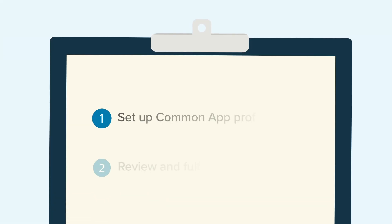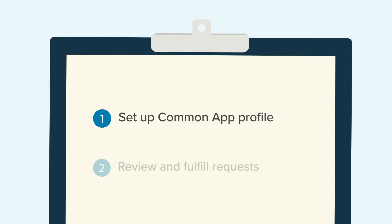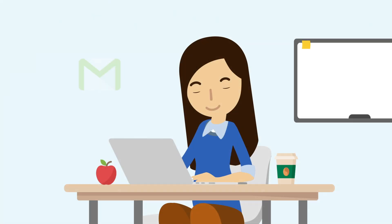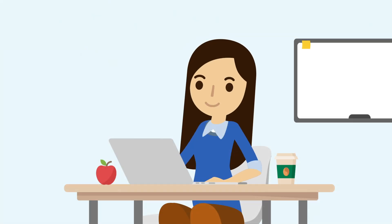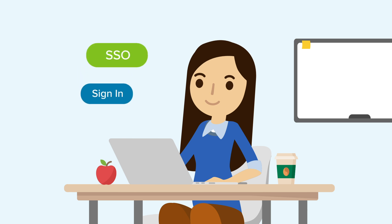Once you've received your first request, you'll need to set up your Common App profile in Zello. You'll get notifications of your students' requests by email. Click Sign In to open the Zello login page in a new tab. Or, if your school uses single sign-on, access Zello as you normally would.